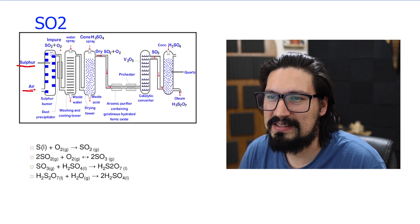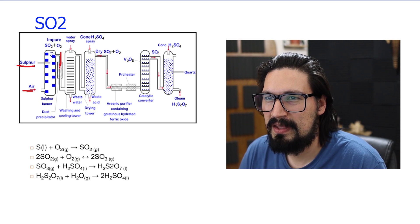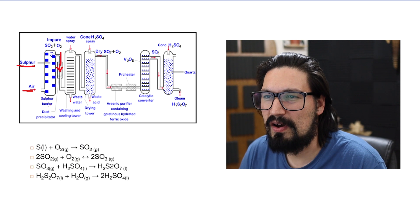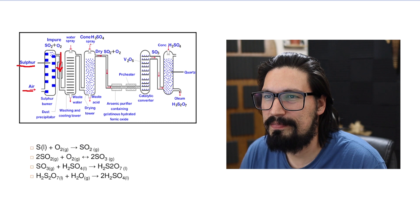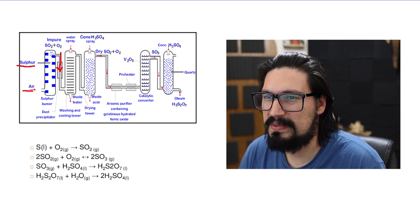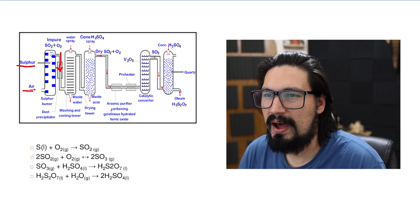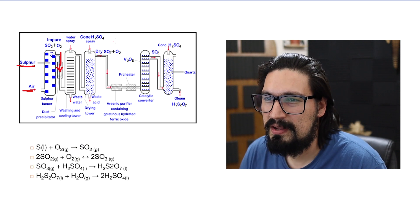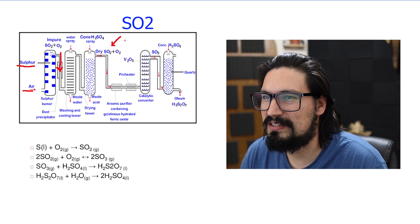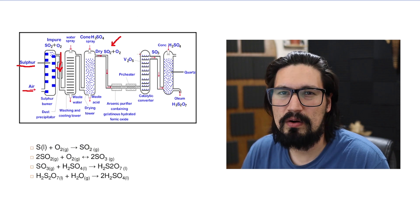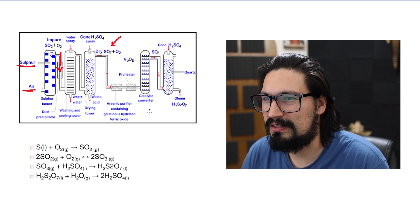The gas stream passes through a dust precipitator to remove particles, then is washed with water and sprayed with sulfuric acid. This removes wastewater, leaving sulfur dioxide and excess oxygen to continue the process.